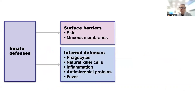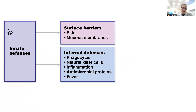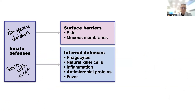The body actually has two defense systems. One is called the innate defense system, also referred to as non-specific defenses. These are the things you're born with — they are in place from birth. Primarily, these are your first and second lines of defense.